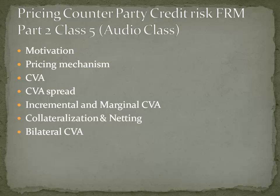We now move to the pricing counterparty credit risk chapter. The pricing of counterparty risk is a function of credit exposure and default probability of a counterparty. We should know how to calculate the credit valuation adjustment in the presence of both unilateral and bilateral contracts, as well as the incremental and marginal CVA, and how to calculate standalone and bilateral CVA spreads. This chapter is largely about credit valuation adjustment.